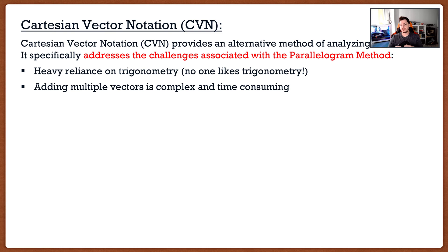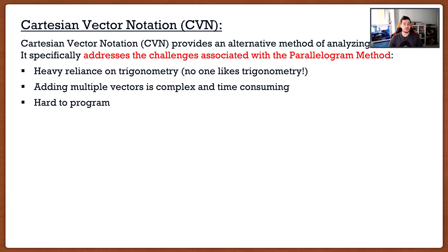With the parallelogram method, if we have three or more vectors we have to go two vectors at a time and slowly work our way up — that's a pain. The last problem is it's hard to program. As you'll see later, everything in engineering can be done nicely using a computer, and if the problem is basically just trigonometry it's very hard to program. Cartesian vector notation is going to be very simple to program.